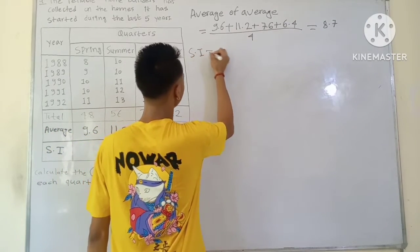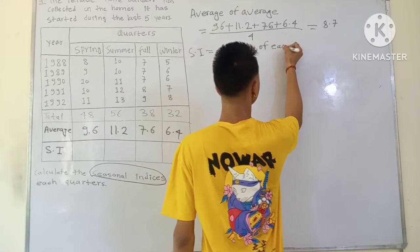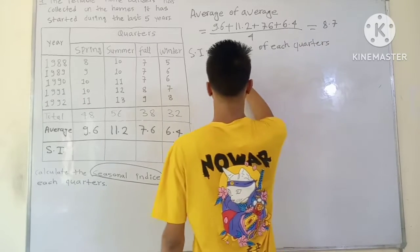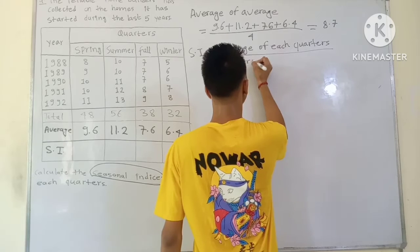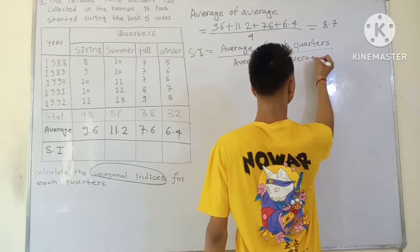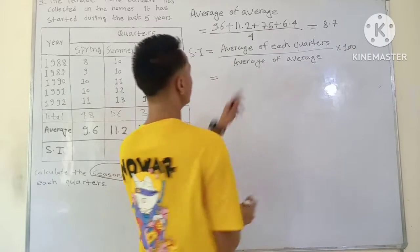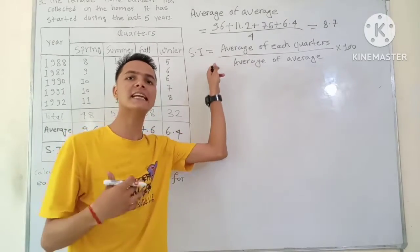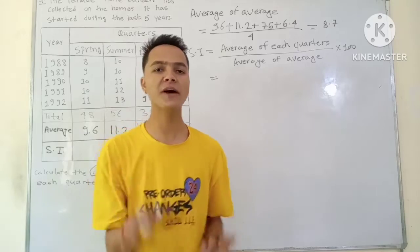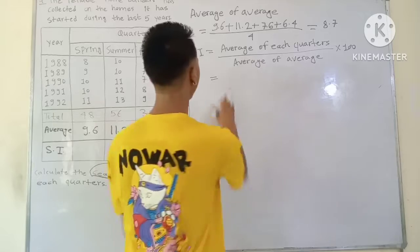The formula for Seasonal Index (SI) is: SI equals the Average of each quarter divided by the Average of Average, multiplied by 100%. This is the formula for seasonal indices — average of each quarter divided by average of average, into 100.